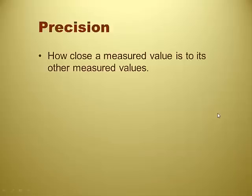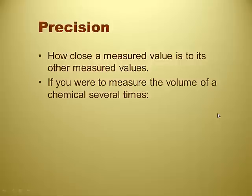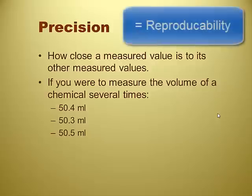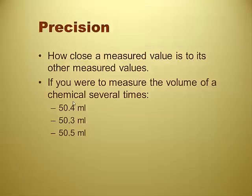Precision. How close a measured value is to its other measured values. If you were to measure the volume of a chemical several times, and get 50.4 mils the first time, 50.3 mils the second time, 50.5 mils the third time. That's pretty precise, isn't it? Because they're almost the same thing. Yeah, that's pretty good. So you take 161.2, and divide that by three, and you get 50.4.